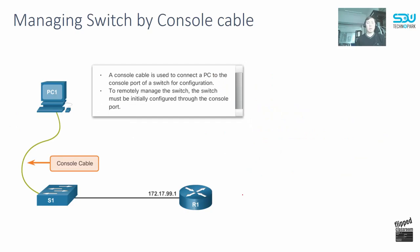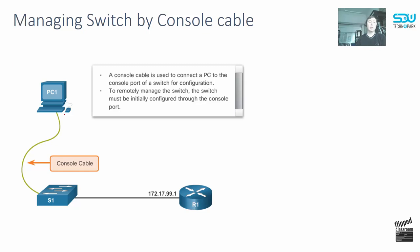How do we manage a switch with a console cable, and why? The console cable is a management cable mostly used during initial configuration, at the moment when the device doesn't have an IP address. For example, when you start configuring a switch and there is no IP address configured yet, you cannot manage the switch by IP, so you use the console cable directly from your computer to the switch's console port.